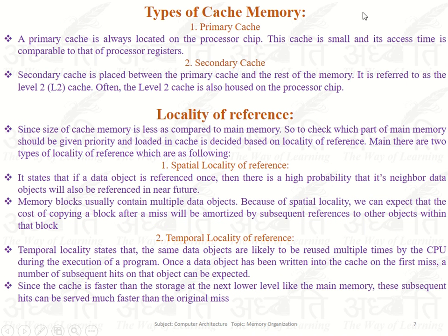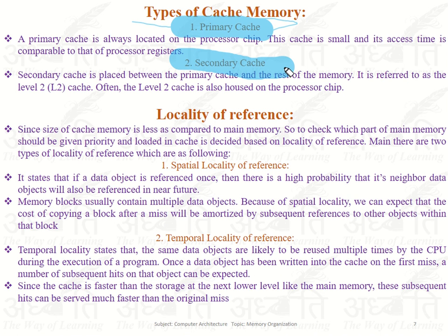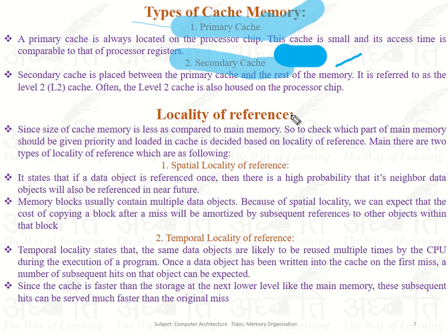Regarding types of cache memory: if cache memory is attached to a particular CPU chip, it is called a primary cache. If it is separate from the CPU chip, it is called a secondary cache.